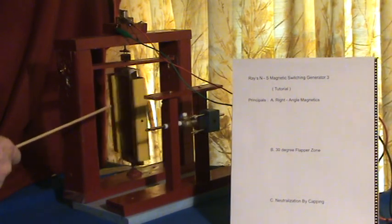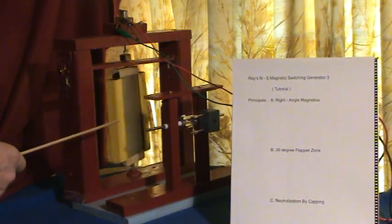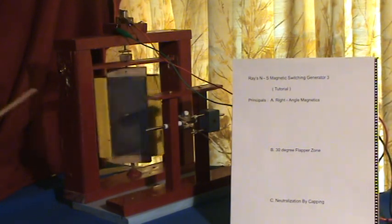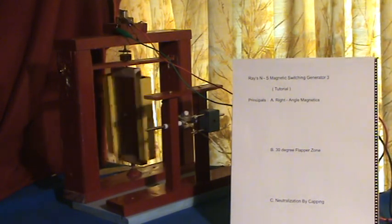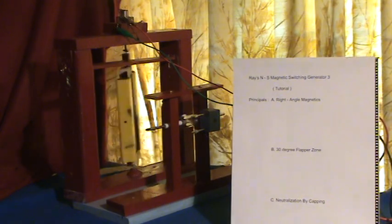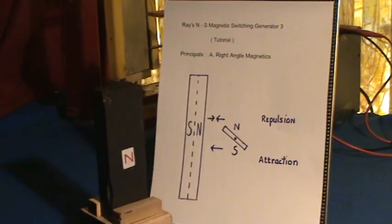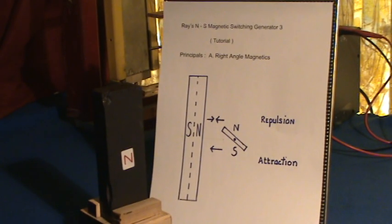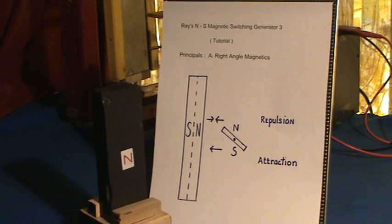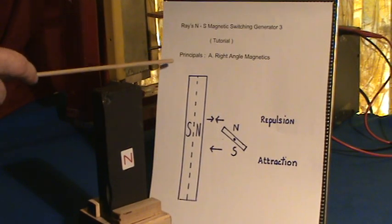So first of all we'll go ahead and go over the 90 degree angle magnetics. I'll set it up and I'll be back. Okay we're set up for the right angle magnetics principle.